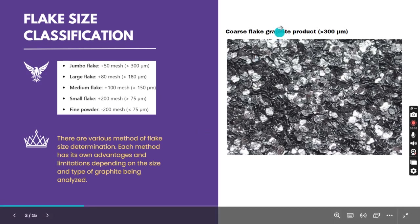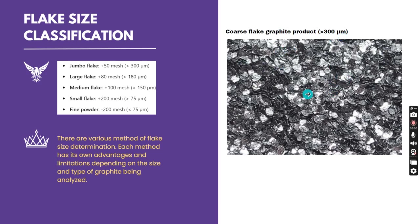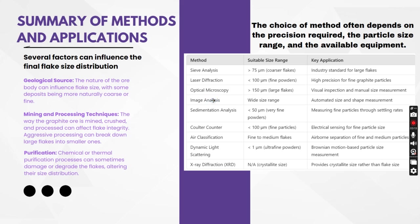This shows what more than 300 micron jumbo size flakes look like — totally separated. There are various methods of flake size analysis. We'll be discussing them one by one and comparing each method's positive and negative aspects, because all are having positive aspects but also limitations.